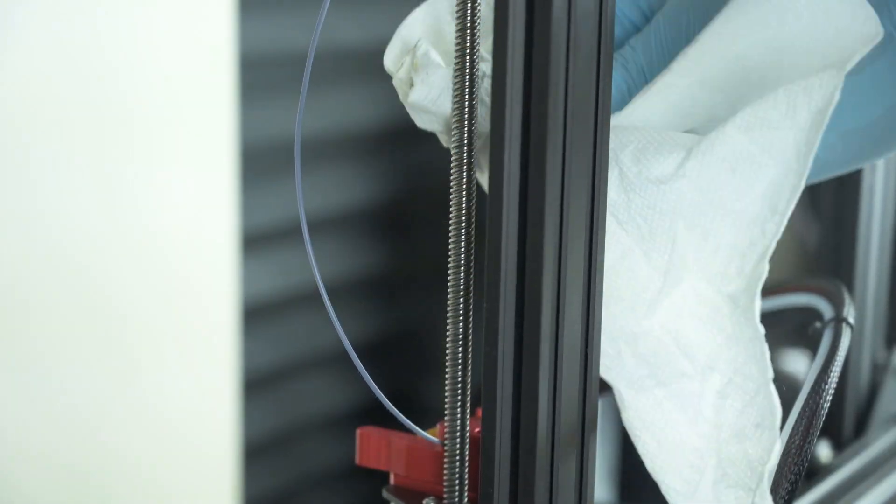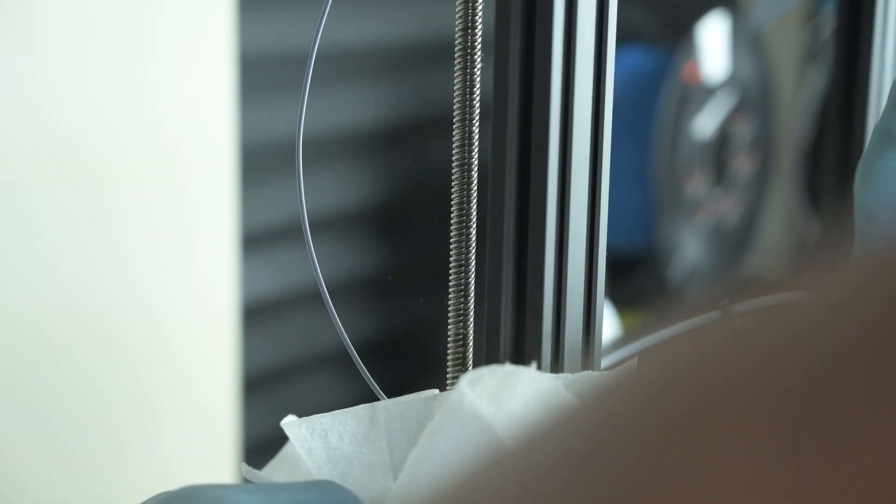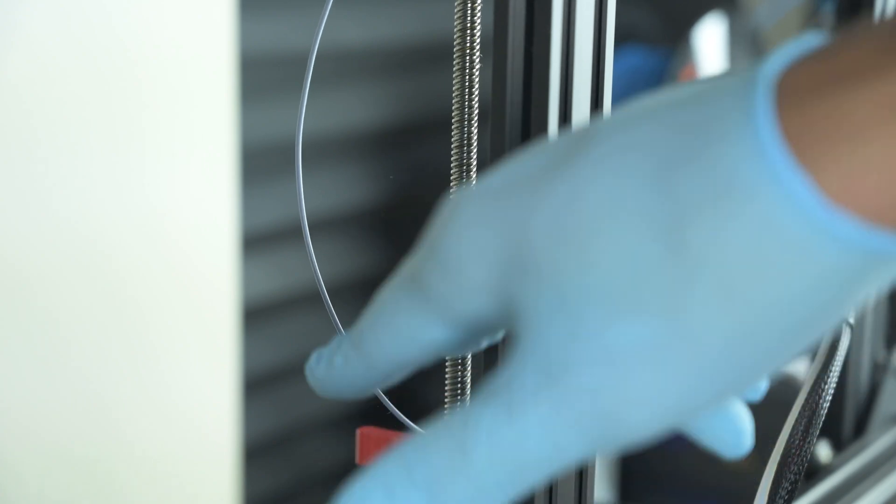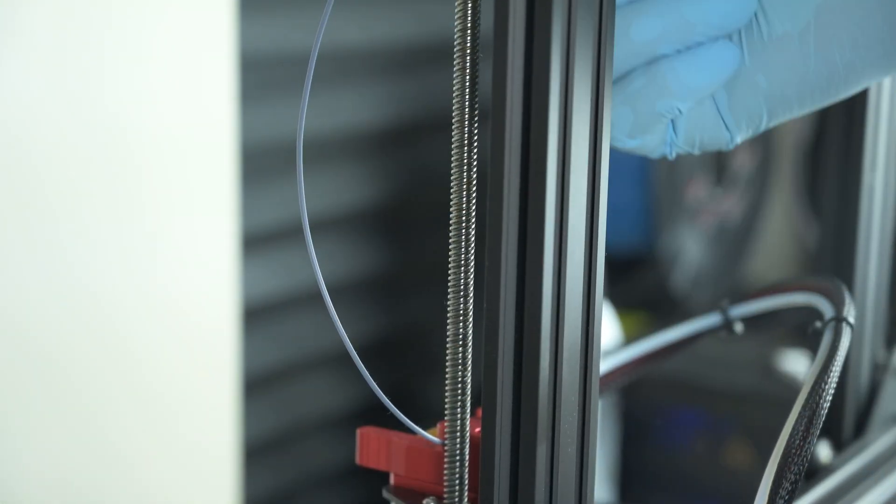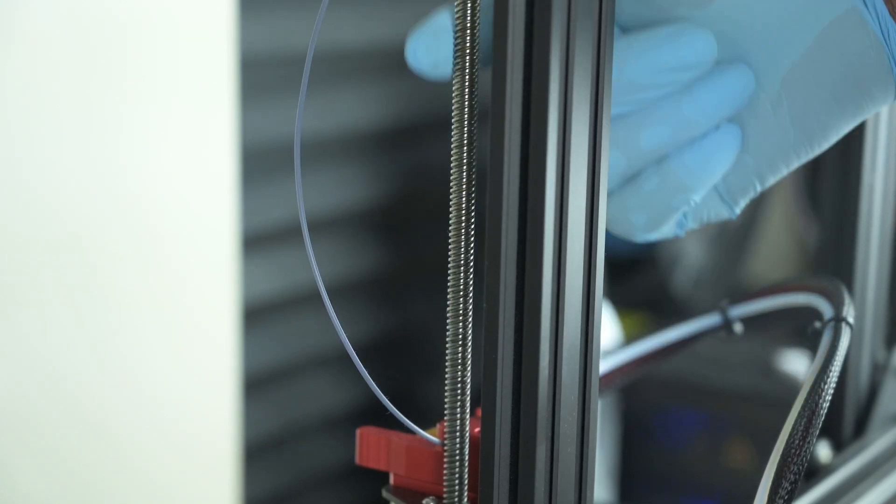So now that this is clean, this will hopefully help the gantry slide up and down a lot easier. You will also notice that if you 3D print regularly, you'll see a lot more buildup here at the bottom than you will at the top. And that's because the gantry slides more along this general area than it does this area.